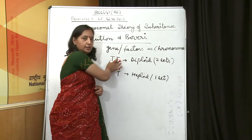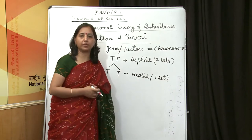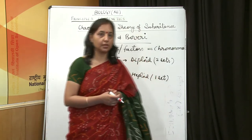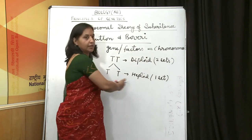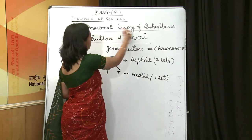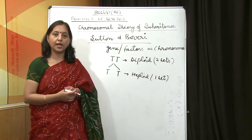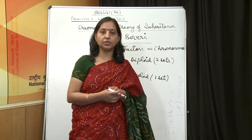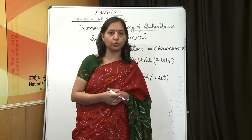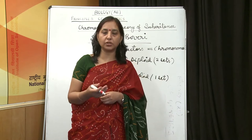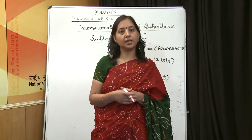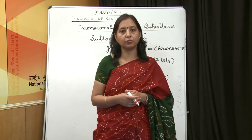Chromosomes are also found in pairs. They also separate at the time of gamete formation — they become haploid at the time of meiosis. On the basis of these similarities between genes and chromosomes, Sutton and Boveri gave the chromosomal theory of inheritance. As per this theory, the genes or factors are actually located on chromosomes, and the law of segregation and the law of independent assortment, which was shown by genes, is also shown by chromosomes.